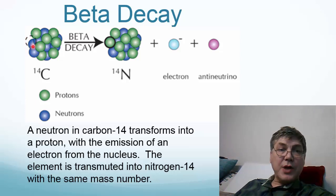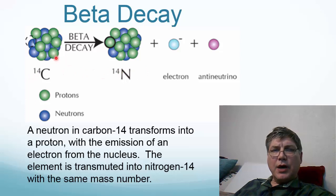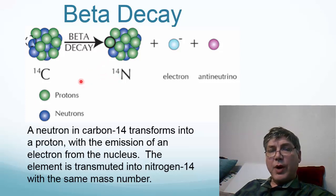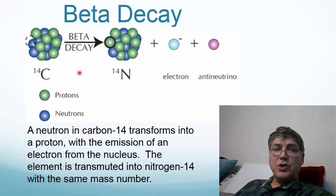So we have a 14 here for carbon and a 14 here. But the atomic number does change. The atomic number actually goes up. So it goes from 6 for carbon up to 7 for nitrogen. So with beta radiation, we have the atomic number going up by 1. Alpha radiation, remember, it went down by 2.